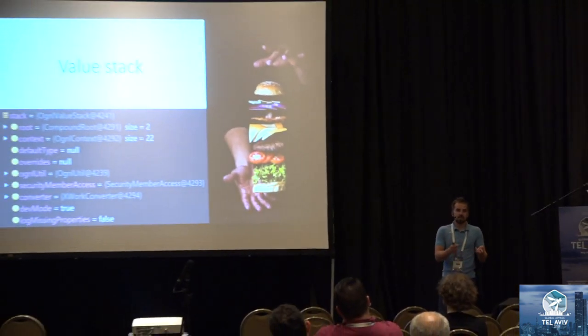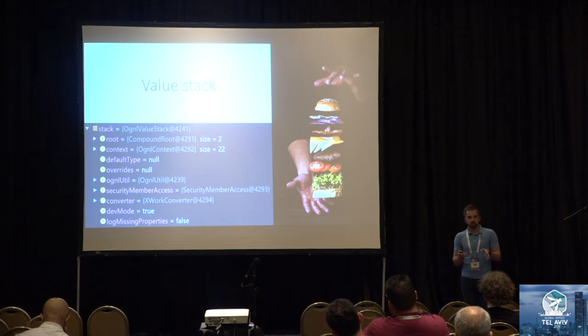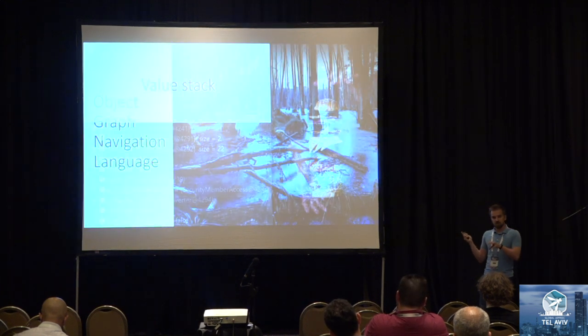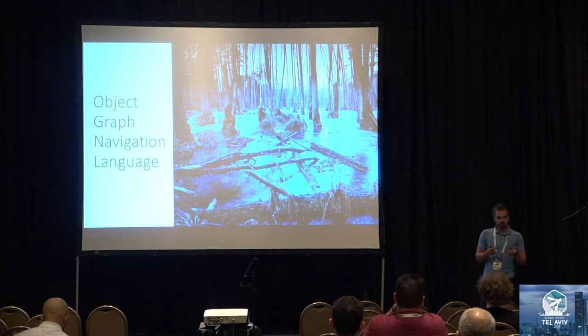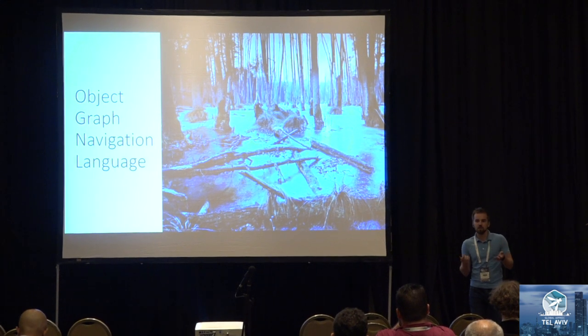The answer lies in Struts internals. The keystone of Struts is the value stack. The value stack is an object that contains other objects — for example, all the dates, all the application settings, all the security settings, pretty much everything. The framework uses OGNL to manipulate objects inside the value stack. OGNL stands for Object Graph Navigation Language. It's a Java native expression language that allows you to manipulate Java objects pretty much any way you like.